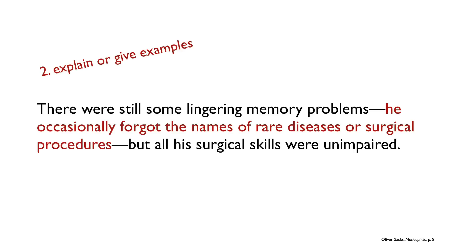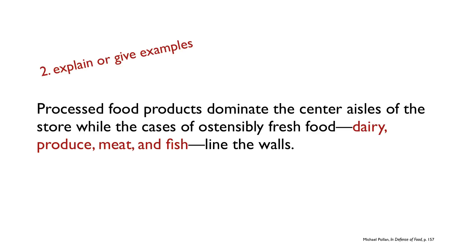Another way you can use an appositive is to explain or to give examples for information that has come previously. You can see how Oliver Sacks uses an appositive here — in this case the appositive could function as a complete sentence; it's an independent clause — to explain or give more examples about lingering memory problems that one of his patients is having.